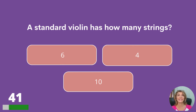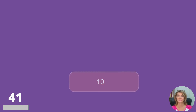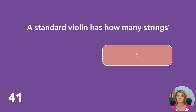A standard violin has how many strings: six, four, or ten? Four.